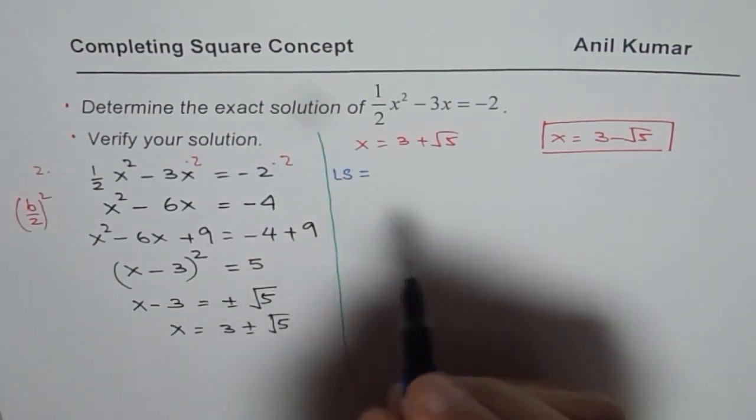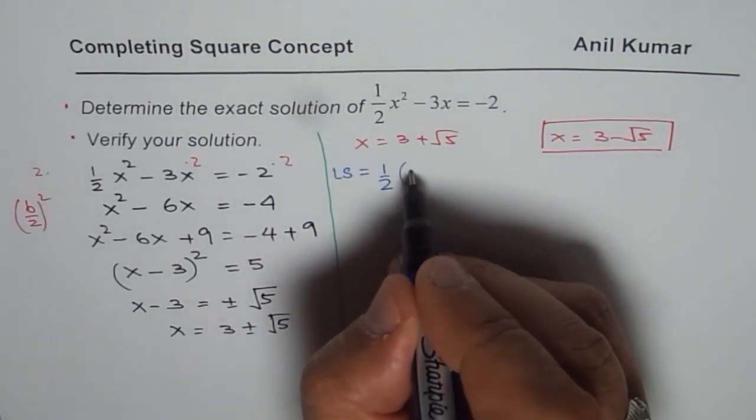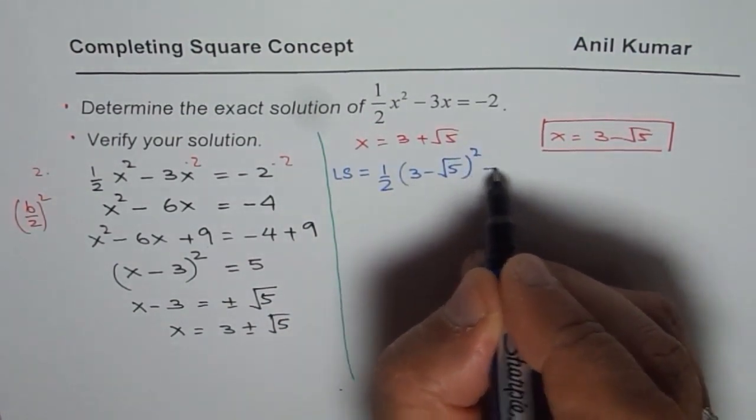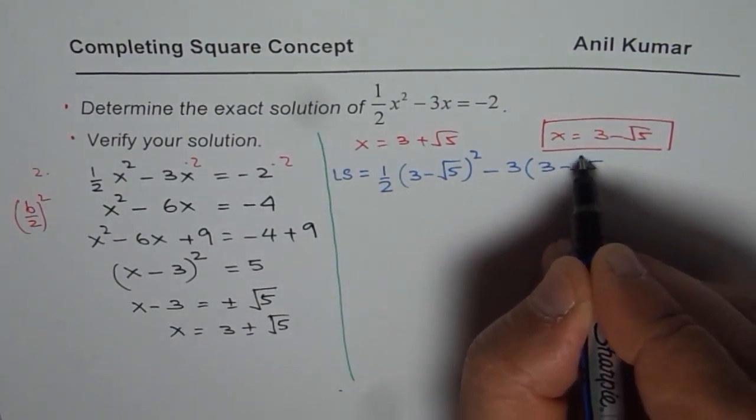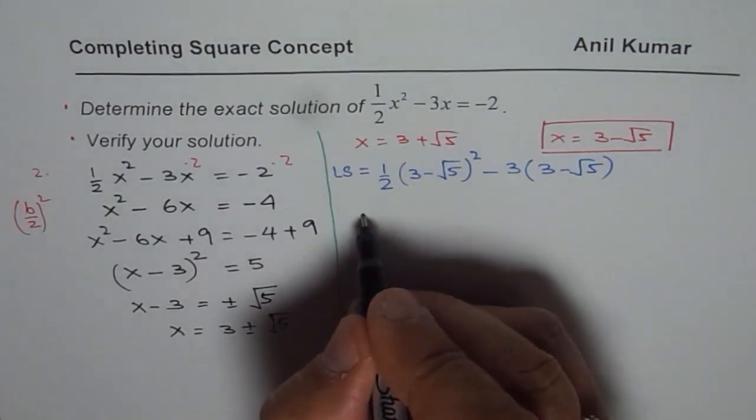Let's say left side is equals to half of instead of x I'm writing 3 minus square root 5 whole square. So we get 3 times again 3 minus square root 5, right? So that's the left side. Now let's expand.